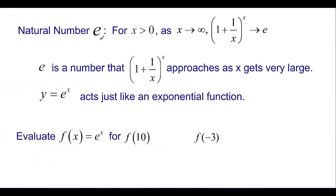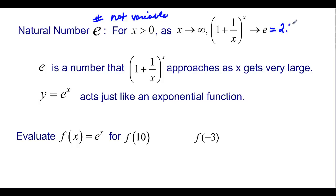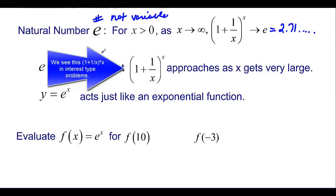Now let's talk about the natural number e. I want you to realize that e is a number — it's not a variable. As x goes to infinity, the expression (1 plus 1 over x) to the x approaches e. If you put 1 plus 1 over 1 million to the 1 millionth power into your calculator, you'll get close to 2.71..., which is the value of e. It's a naturally occurring number, especially in science and nature, which is why we call it the natural number.